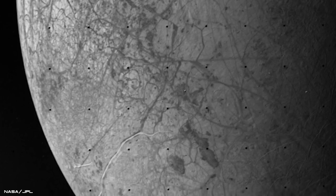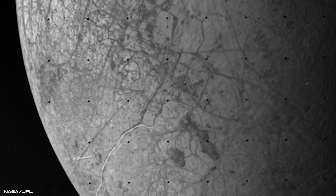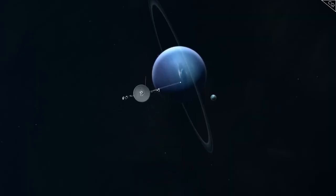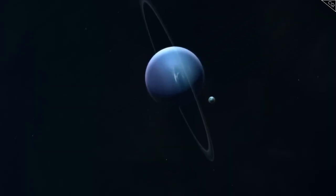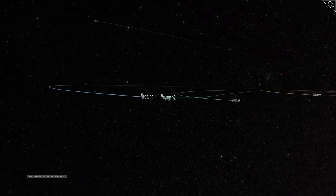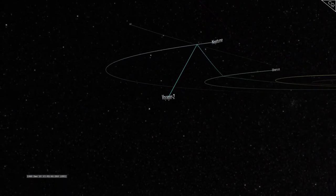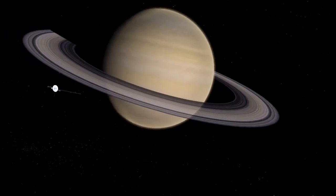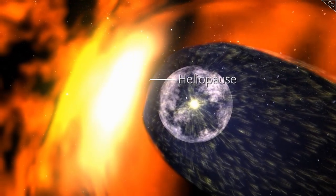As of January 2024, Voyager 1 is approximately 14.9 billion miles, 158 times Earth's distance from the Sun, from our planet, making it the farthest human-made object in space. Voyager 2 achieved a major milestone in November 2018, becoming only the second spacecraft to enter interstellar space following Voyager 1's breakthrough in August 2012.